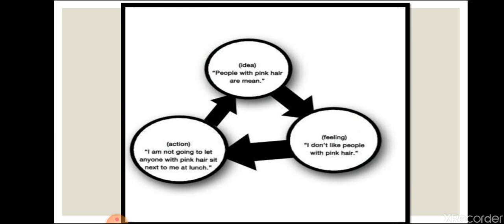Let's understand the difference between prejudice, discrimination, and stereotypes. A stereotype is an idea — like 'people with pink hair are mean.' When you start feeling that you are not going to like that person — 'I don't like people with pink hair' — that is prejudice. And discrimination is action: 'I am not going to let anyone with pink hair sit next to me at lunch.' When it takes the form of action it is discrimination; when it is an idea it is a stereotype; and when we start feeling bad about someone that is prejudice.